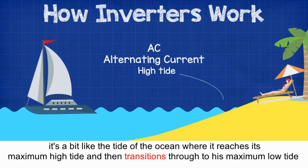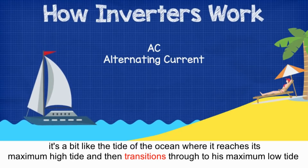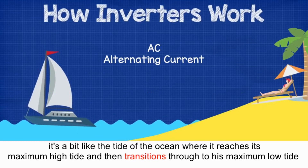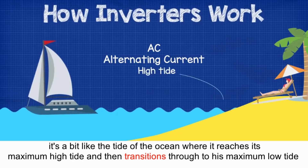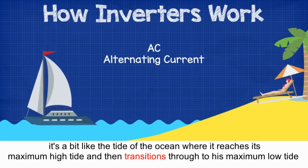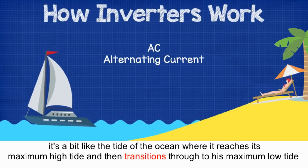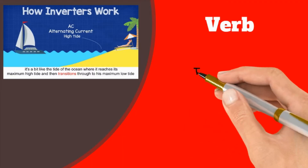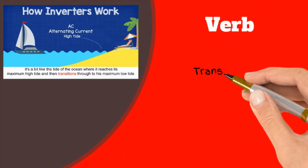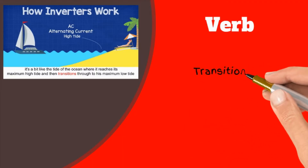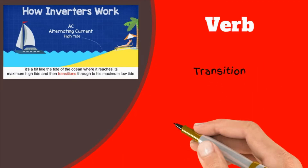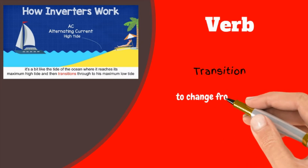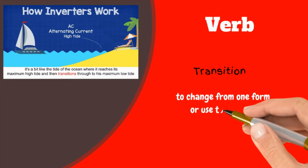It's a bit like the tide of the ocean, where it reaches its maximum high tide and then transitions through to its maximum low tide. Transitions: to change from one form or use to another.